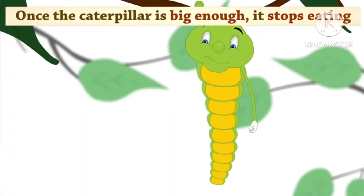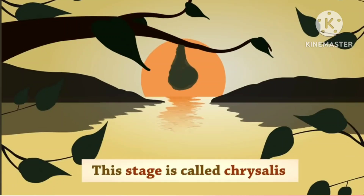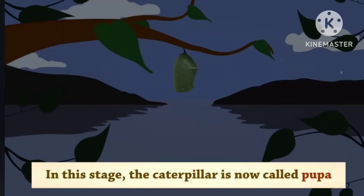Once the caterpillar is big enough, it stops eating and forms a protective layer around itself. This stage is called chrysalis, and in this stage the caterpillar is now called a pupa.